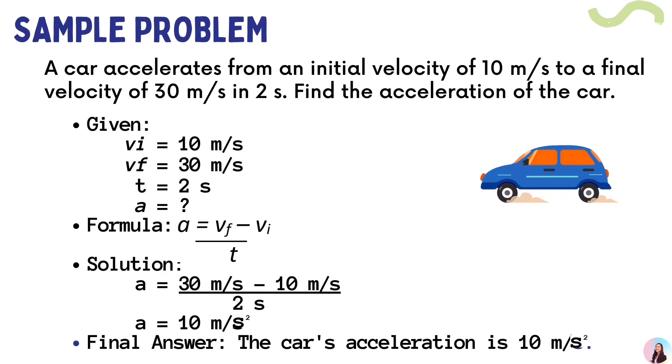First, write the initial velocity which is 10 meters per second. Final velocity is 30 meters per second and our time is 2 seconds. We are looking for the acceleration. For our formula, we are going to subtract the initial velocity from the final velocity and then divide it by time. 30 meters per second minus 10 meters per second divided by 2 seconds is 10 meters per second squared.